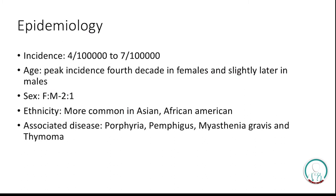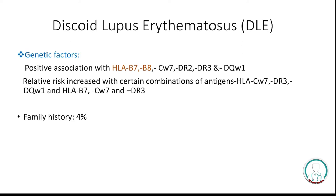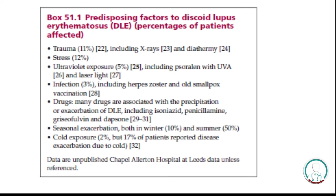Epidemiology: the incidence is 4 to 7 out of 100,000 patients. Peak incidence is in the 4th decade in females and slightly later in males. The sex ratio is female to male 3:1. The disease is more common in Asian and African American populations. It is associated with porphyria, pemphigus, myasthenia gravis, and thymoma. Genetic factors associated with DLE include HLA-B7, HLA-B8, CW7, and combinations such as HLA-CW7 and DR3. Family history is present in 4%.